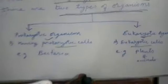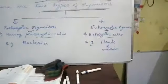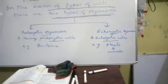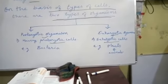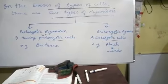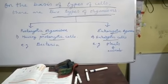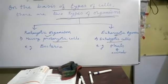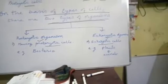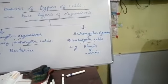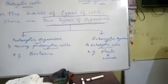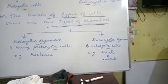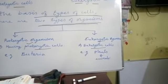Here is a question: how can we distinguish between prokaryotic organisms and eukaryotic organisms? In prokaryotic organisms, the nucleus is not membrane-bound, and there are no membrane-bound organelles. In eukaryotic organisms, there is a well-developed nucleus and membrane-bound structures. These are the key differences between prokaryotic and eukaryotic organisms.